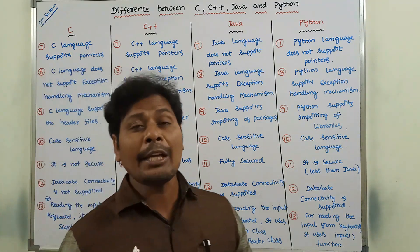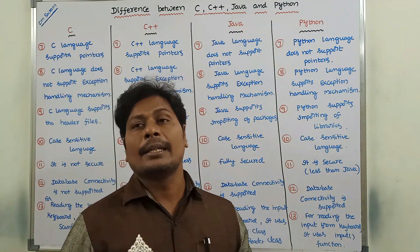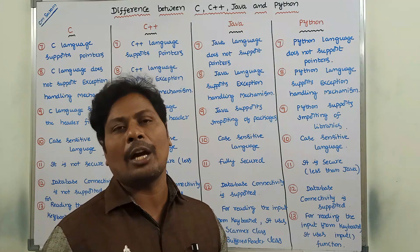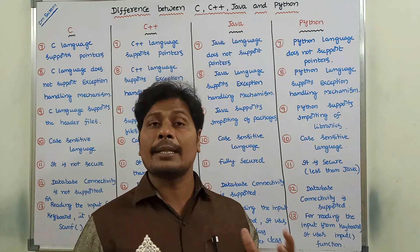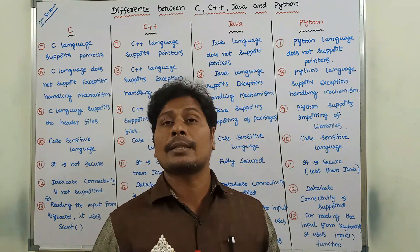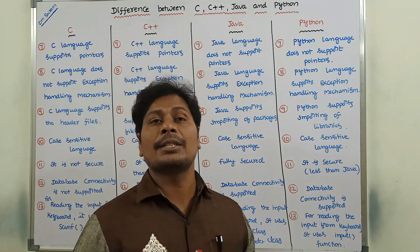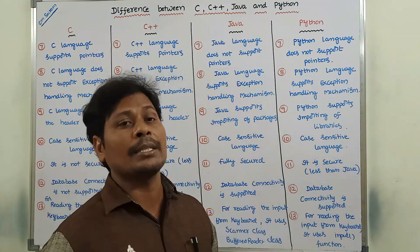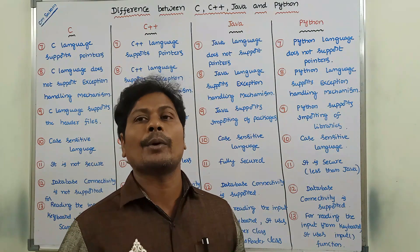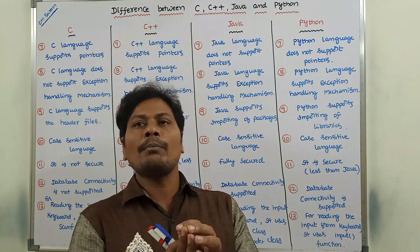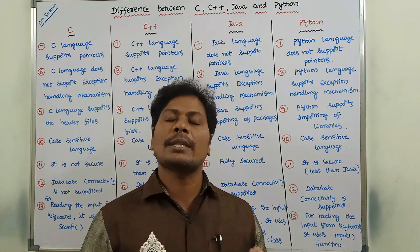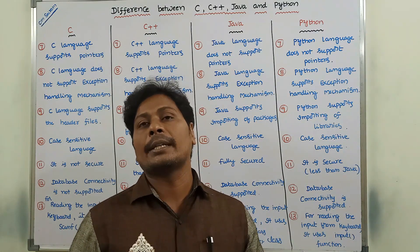Next point is database connectivity. JDBC-type database connectivity is not supported in C language. Database connectivity is also not supported in C++ language. But Java language supports database connectivity — Java Database Connectivity, that is JDBC. Python language also supports database connectivity. So Java and Python support database connectivity, meaning our program can be connected with the database.